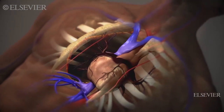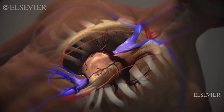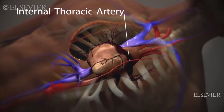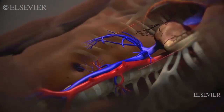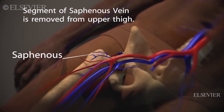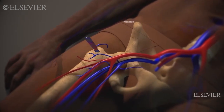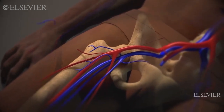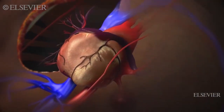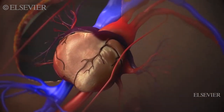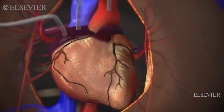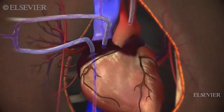Next, one or more healthy graft vessels are selected for the bypass. Commonly used vessels are the internal thoracic or mammary artery in the chest and the saphenous vein in the leg. Alternatively, an arm or wrist artery may be used.